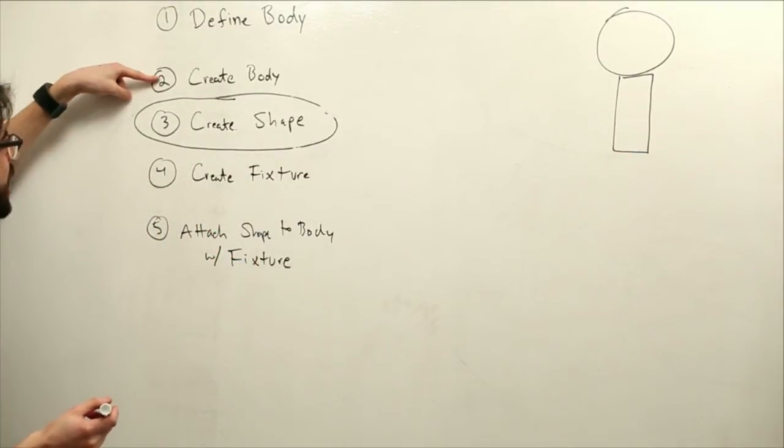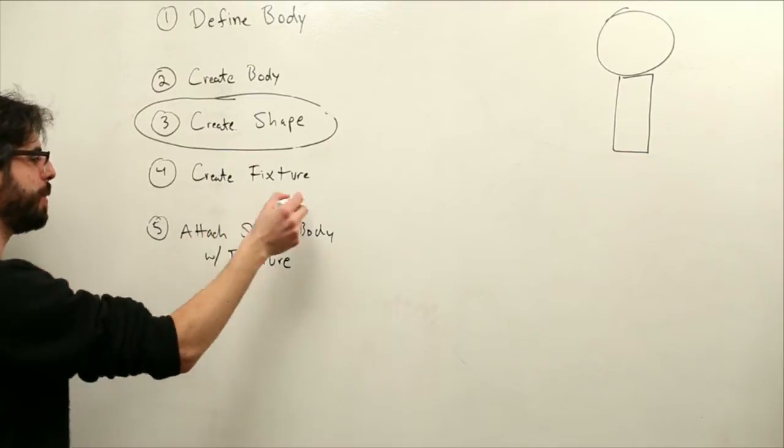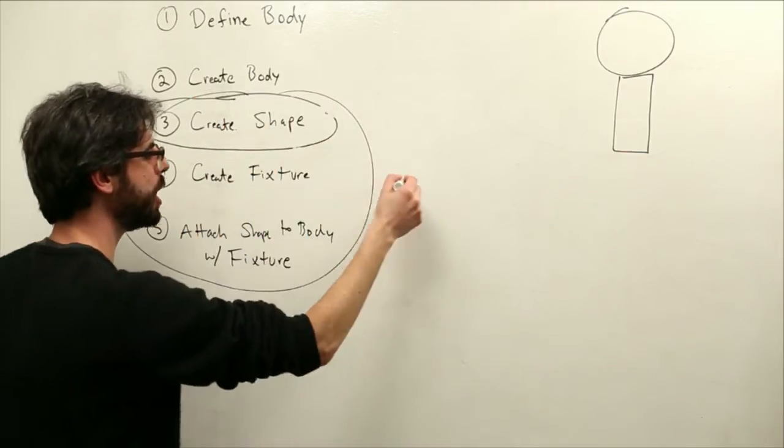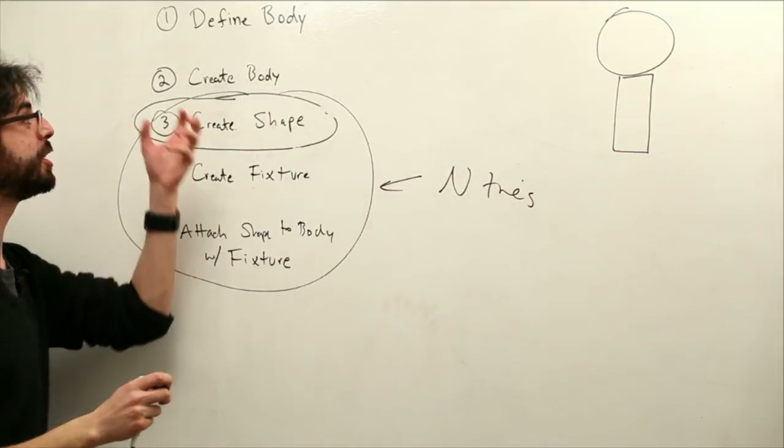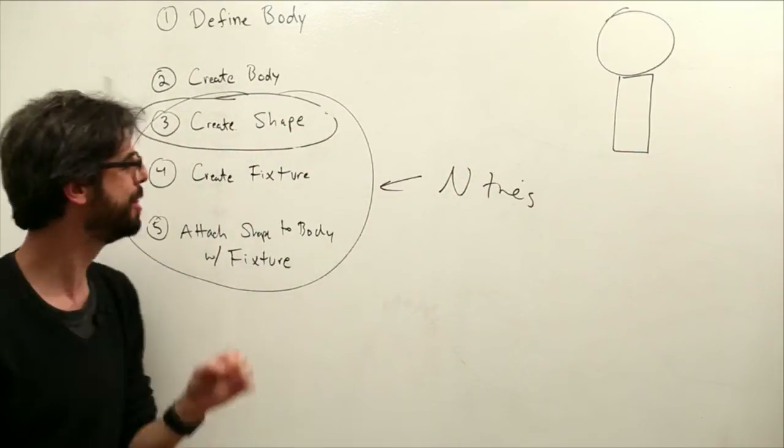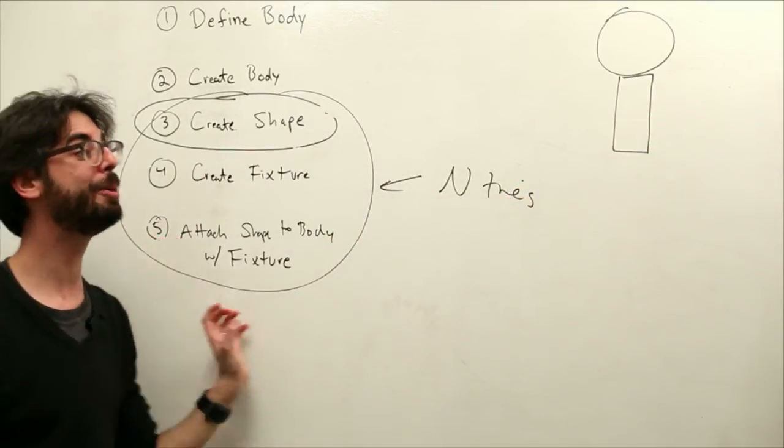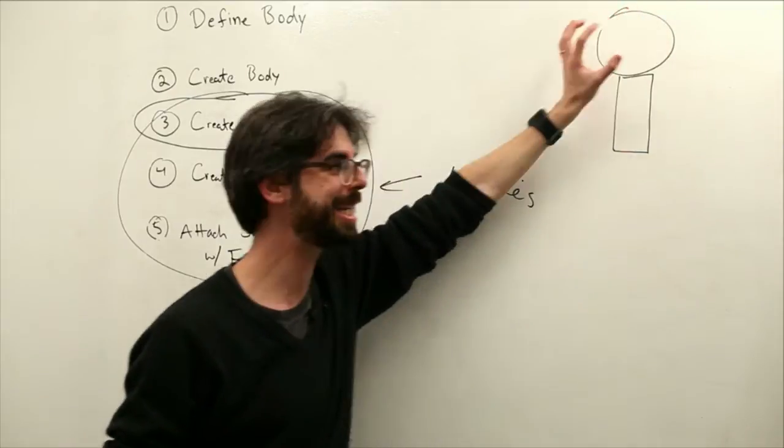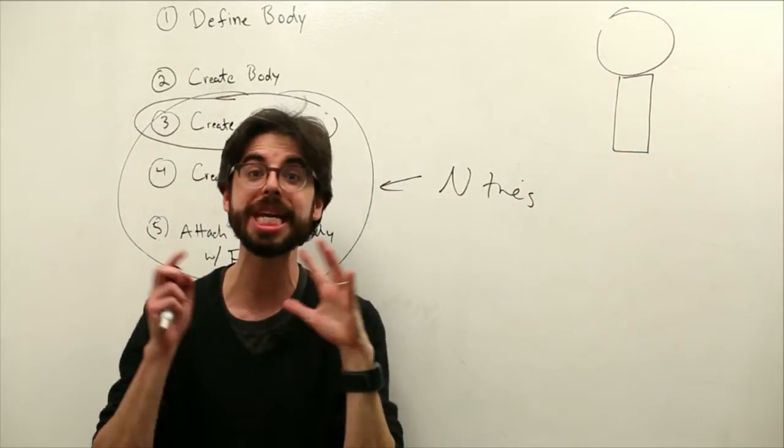So what we're actually doing in our steps here, define a body, create a body, create a shape, create a fixture, attach the shape to body with fixture. We're going to do this n times. So we have to define the body and create the body, then we create the polygon shape box and attach it to the body. Then we create the circle shape box and attach it to the body.